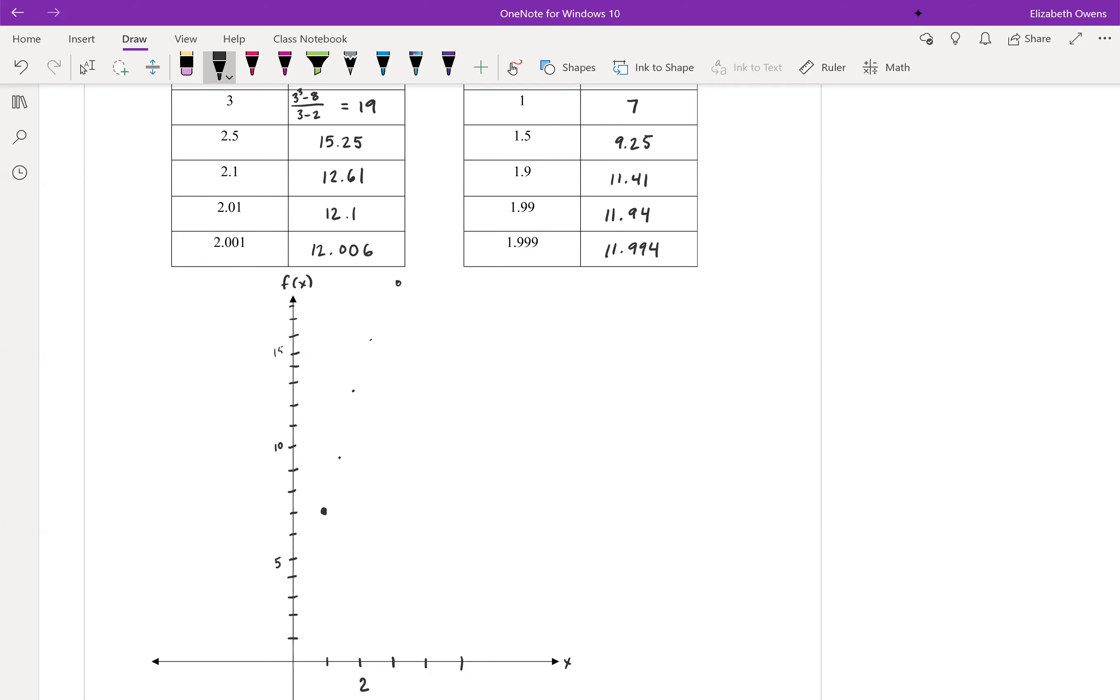So that's actually where our hole in the graph is gonna go. At 2, 12, there's a hole right here. So that's showing that the function is still undefined there, but that is where the values are headed.